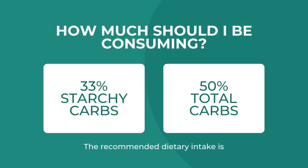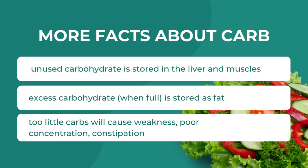How much should you be consuming? 33 percent should come from starchy carbohydrates, and your total carbs including sugars should be 50 percent. So at least 33 percent of the carbohydrates you eat should come from the complex ones, which steadily absorb into your blood and keep your blood sugar balanced — they don't absorb too quickly and then give you a crash later.